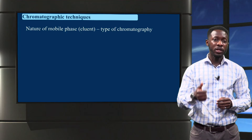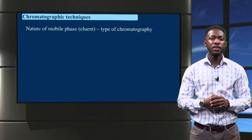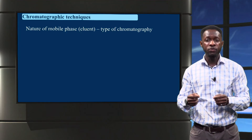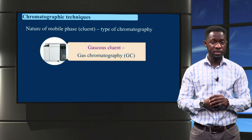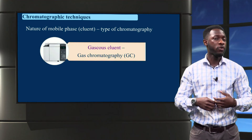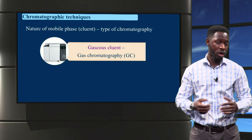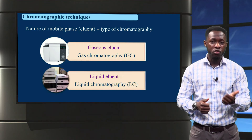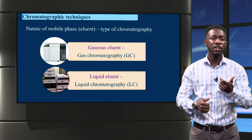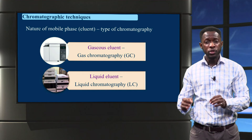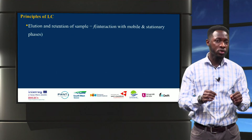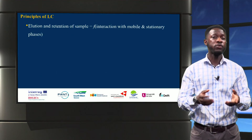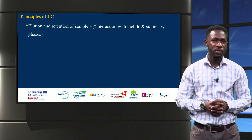Another useful characterization technique is chromatography. The type of chromatography is defined by the state of its mobile phase. Thus, if the mobile phase is gas, it is referred to as gas chromatography, and liquid chromatography has a liquid mobile phase. The elution and retention time of the sample in liquid chromatography is a function of its mobile and stationary phase.